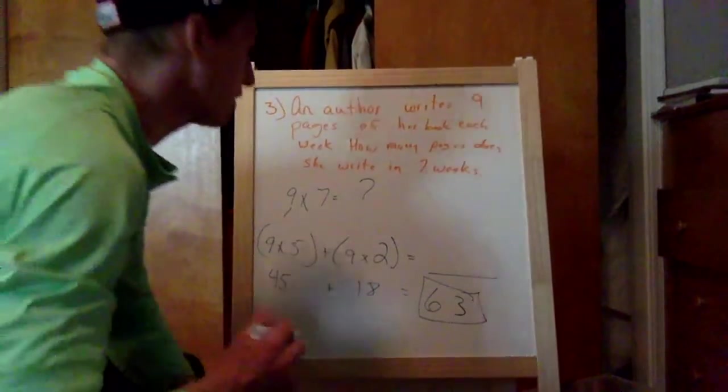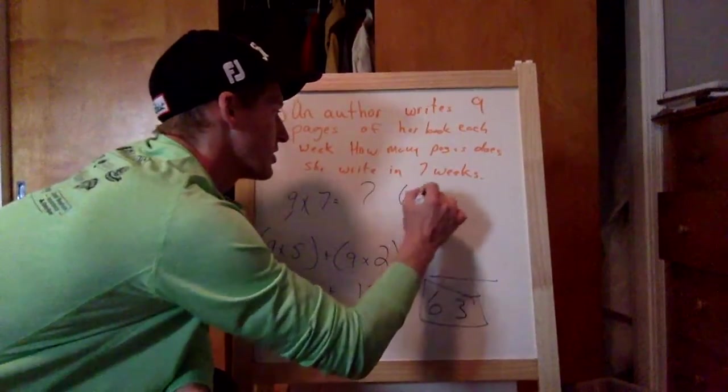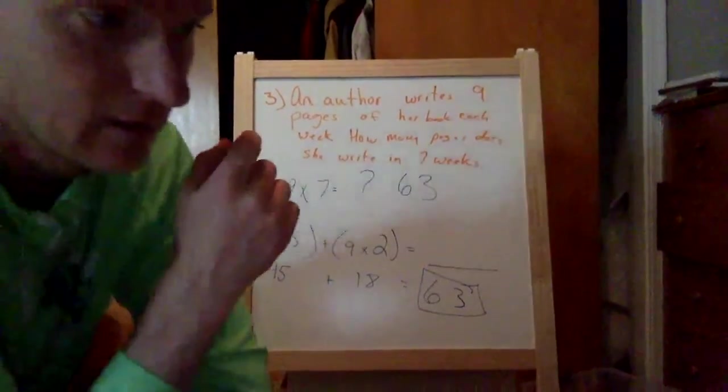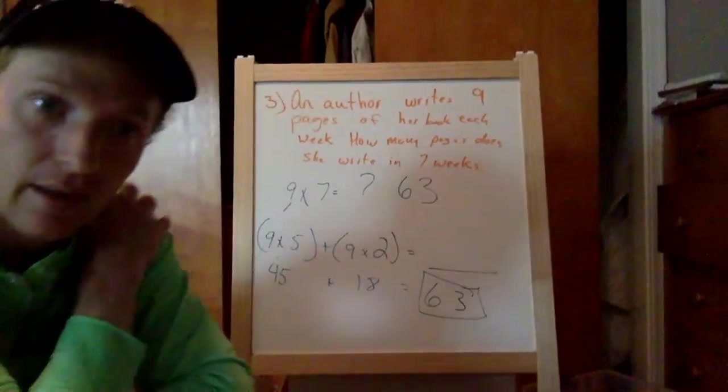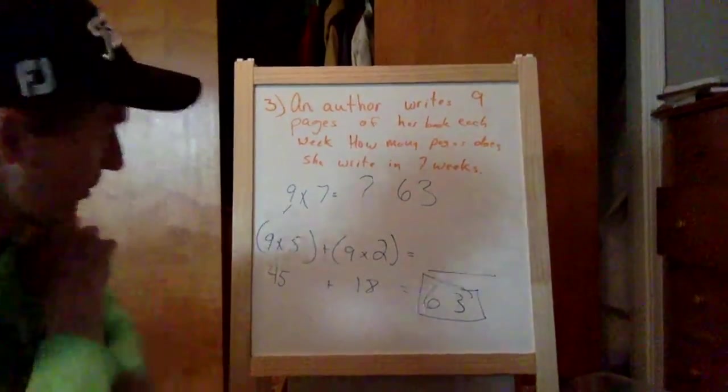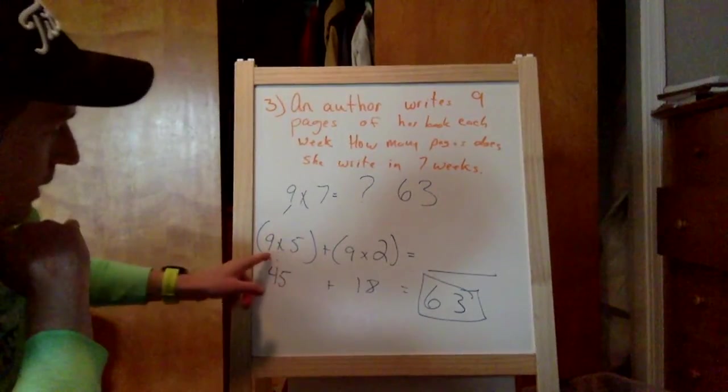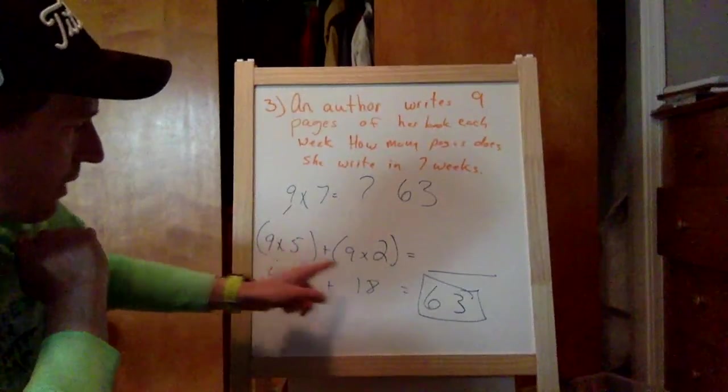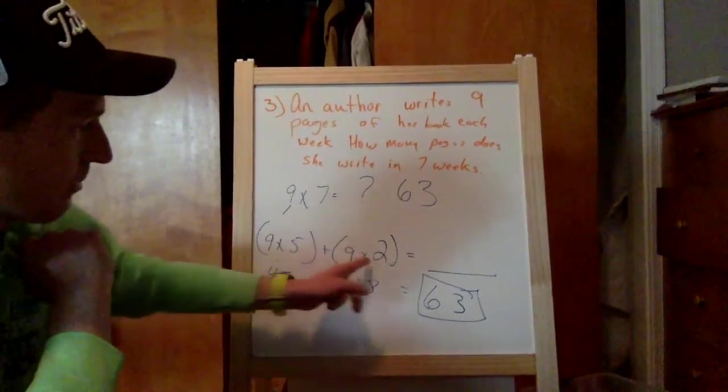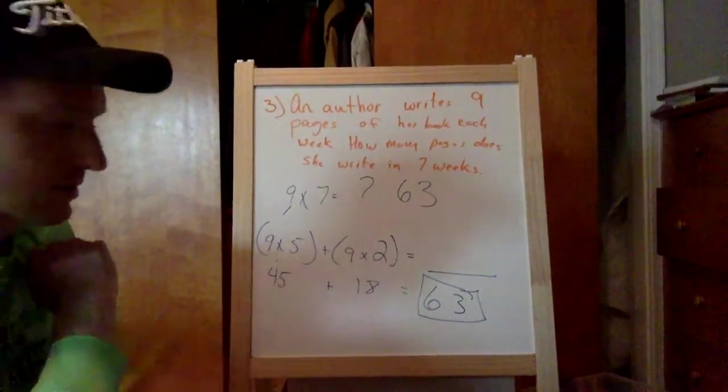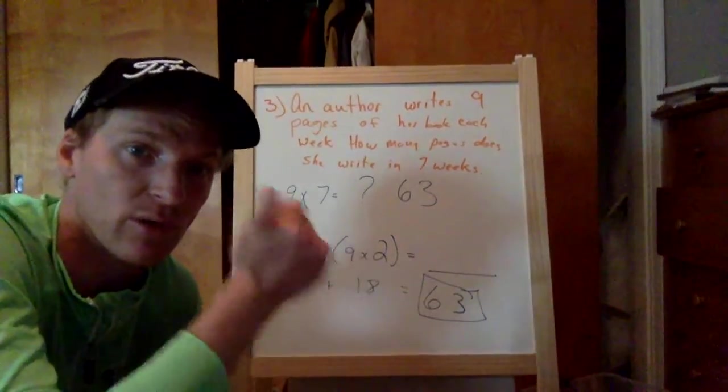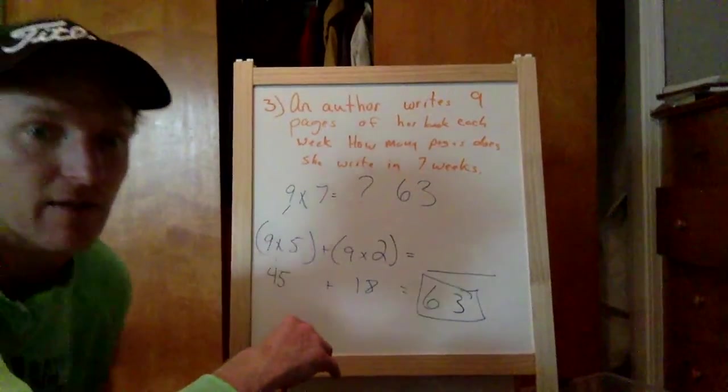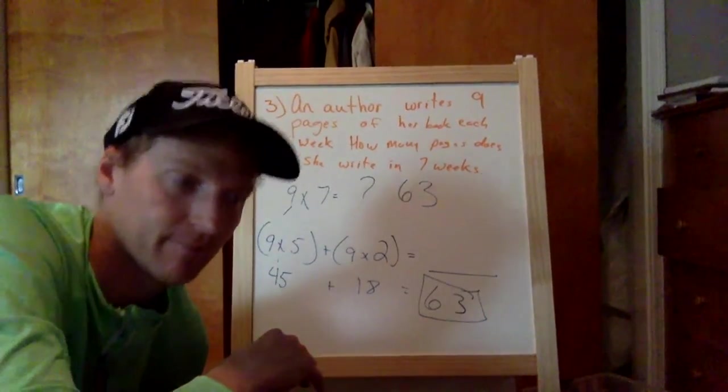So nine times seven equals, so you can write sixty-three pages in seven weeks. They broke it down into fives. That's why we did that. And if you look at it, we keep the nines, and five plus two is seven. That's how we have the five and the two. That's why we broke up that into two different facts. The only reason we did the five is, one, we know our fives, and two, it says you have to use a fives facts, and that is a fives facts.